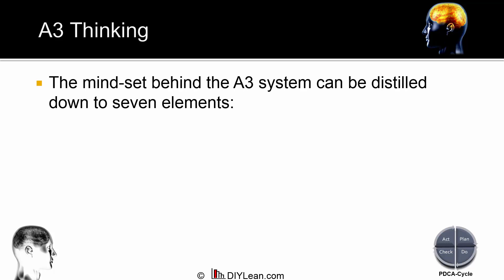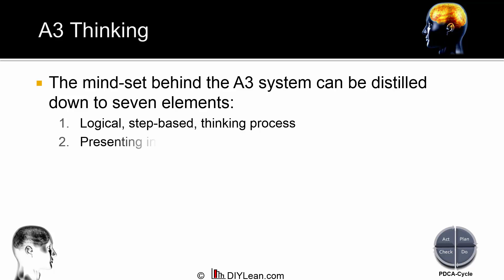Let's go over the thoughts behind A3s. These can be summarized as seven elements. First, it is really a thinking process — A3 thinking — which is logical and proceeds through the same steps in a systematic way. Second, the information on the A3 is presented in a factual, non-judgmental way. The information is meant to reveal the facts on the ground as they are discovered by the team.